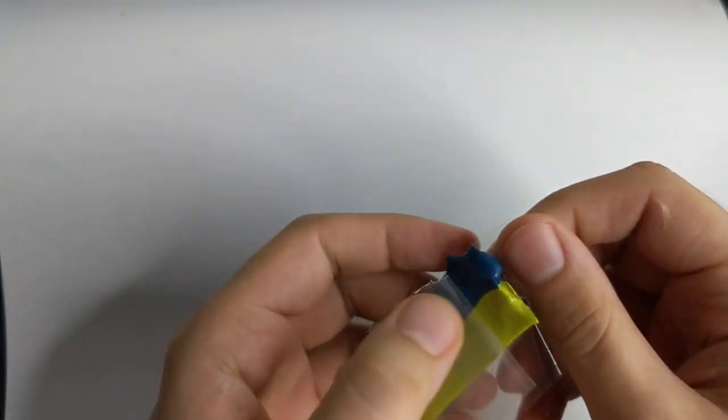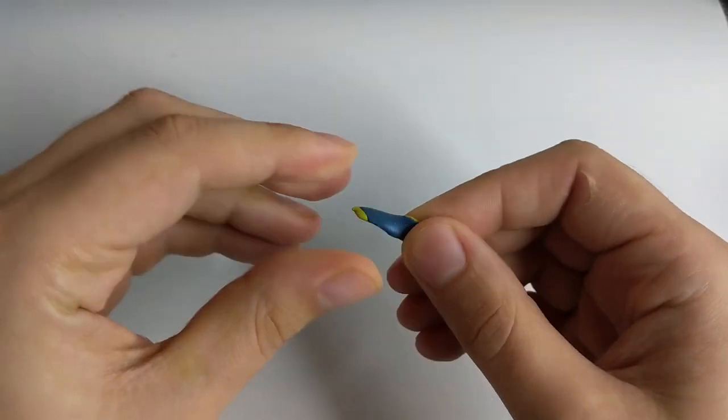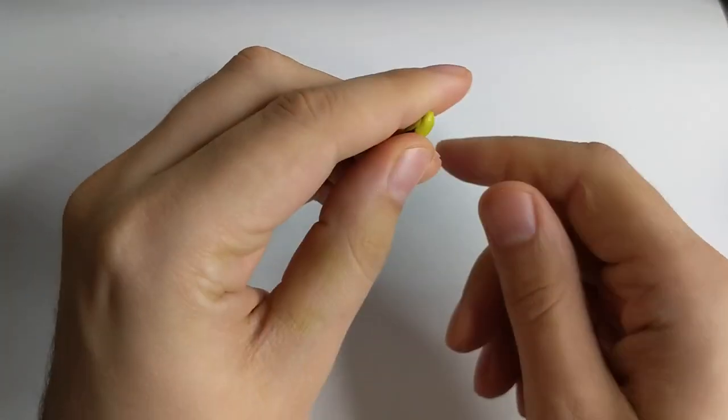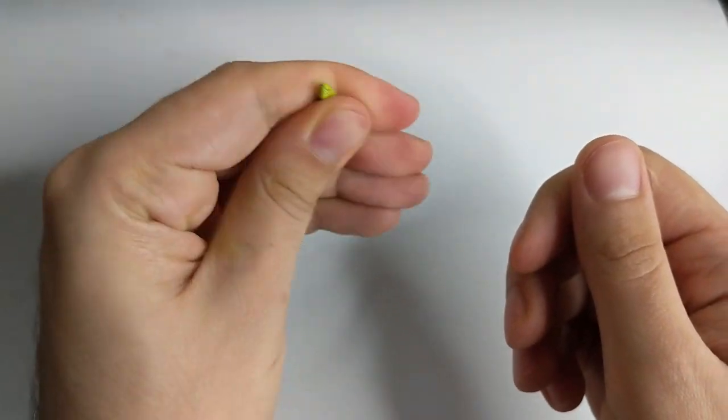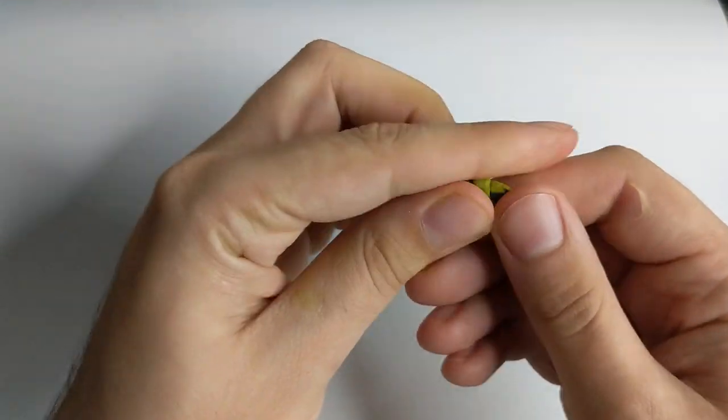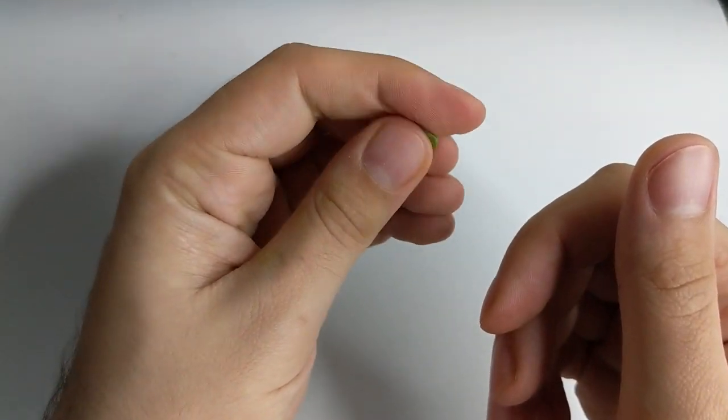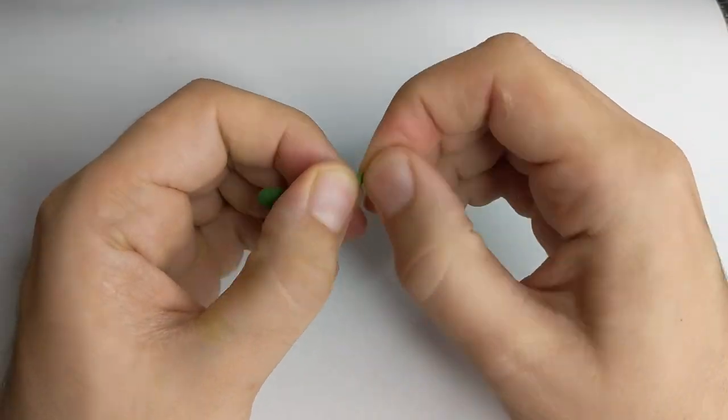We will use green stuff. Just take a small piece of it and then we will mix it very well. It's two components so you need to squeeze it and mix it until it becomes one solid color. And then after that we will form small balls, like make 5-6 different balls in different sizes.